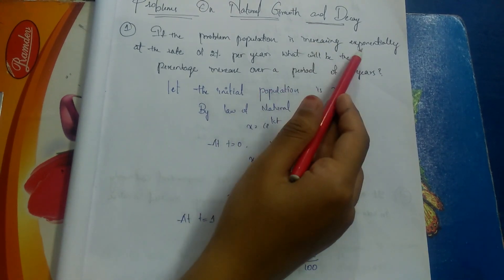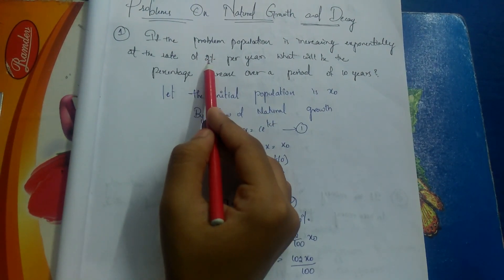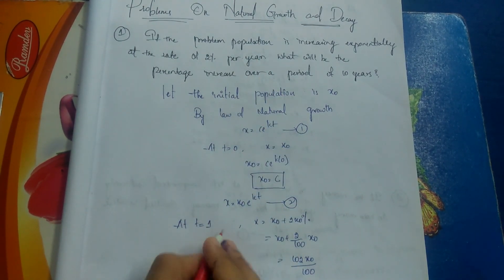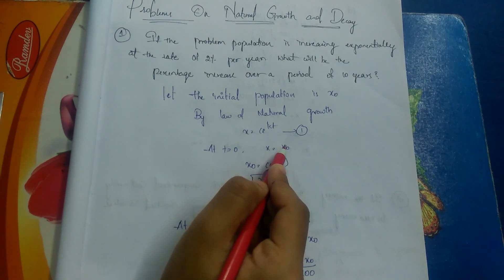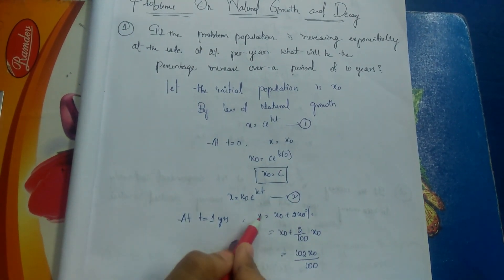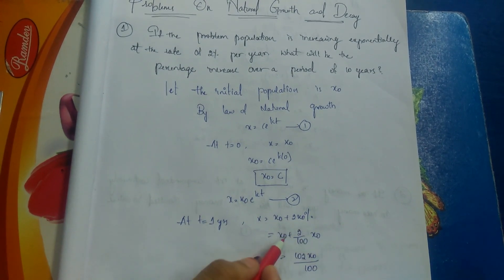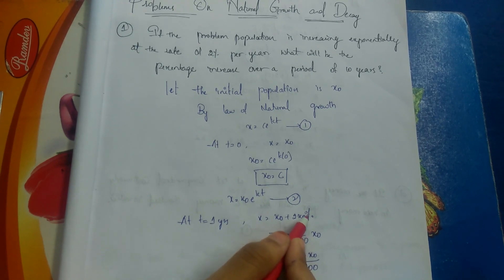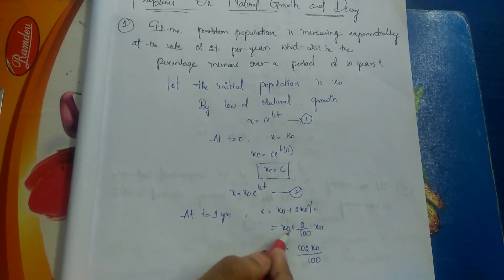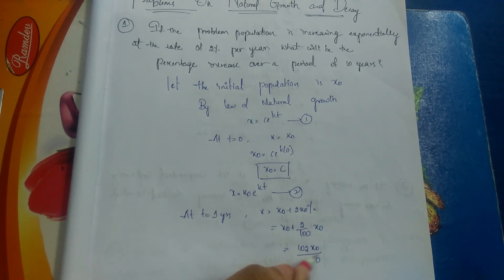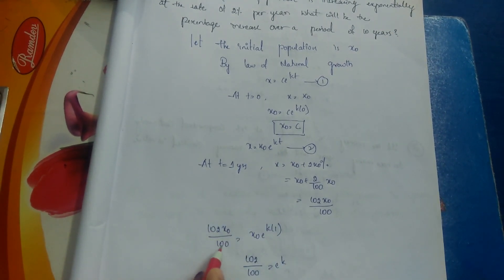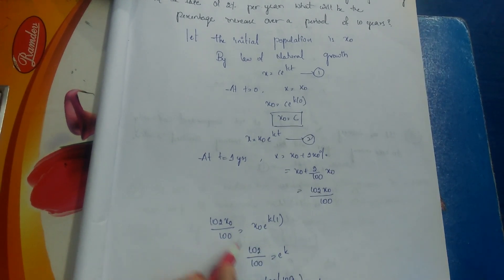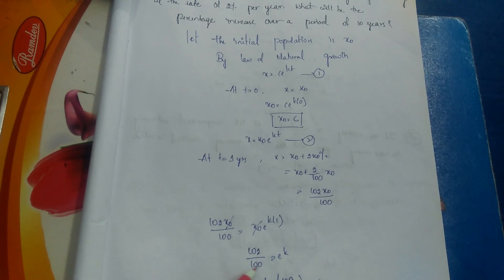The population is increasing exponentially at the rate of 2% per year, meaning at time t = 1 year, it increases by 2%. So x = x₀ + 2% of x₀ = x₀ + (2/100)·x₀ = (100x₀ + 2x₀)/100 = 102x₀/100. Substituting into equation 2: 102x₀/100 = x₀ · e^(k·1), so x₀ cancels and 102/100 = e^k.